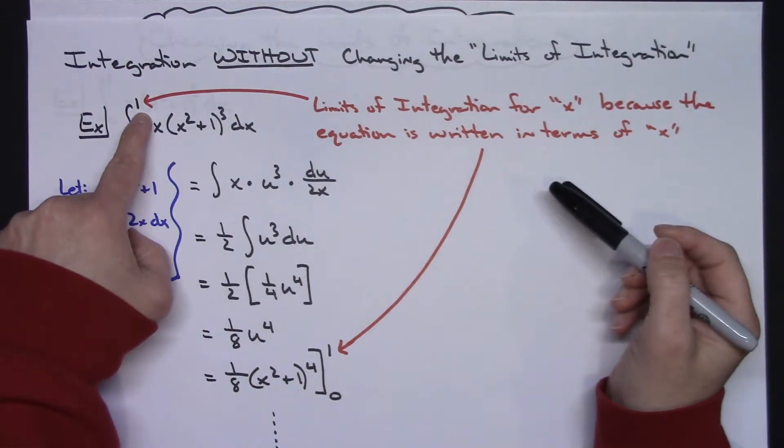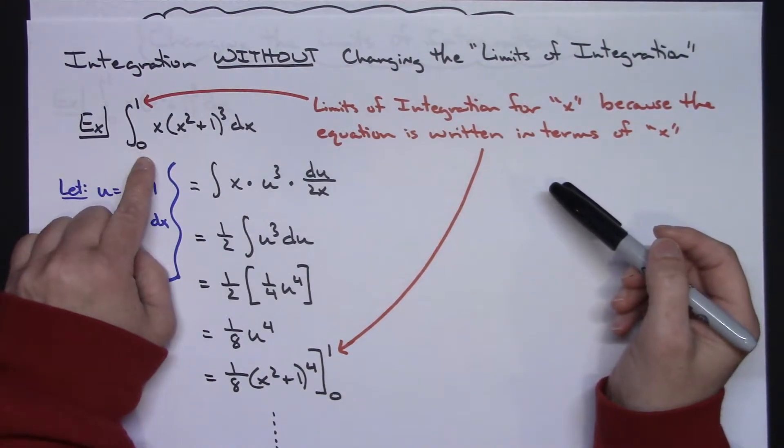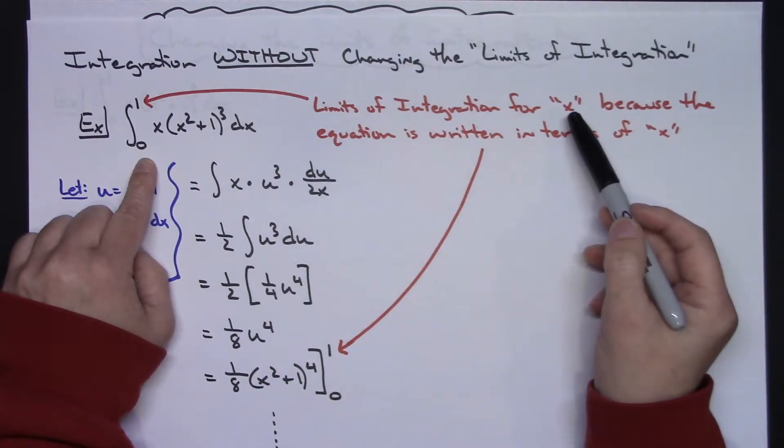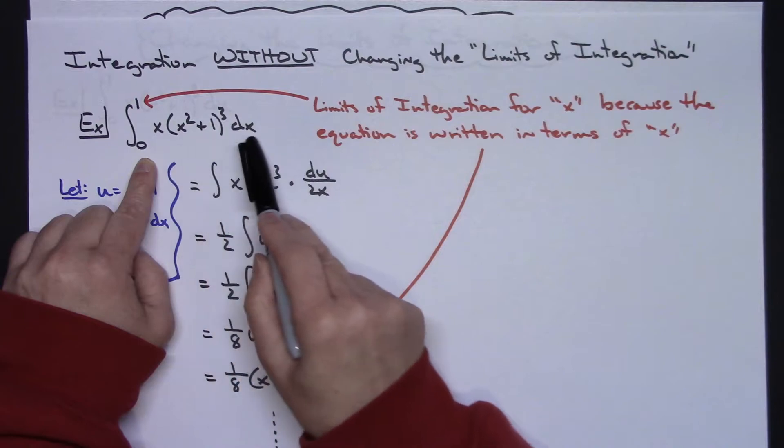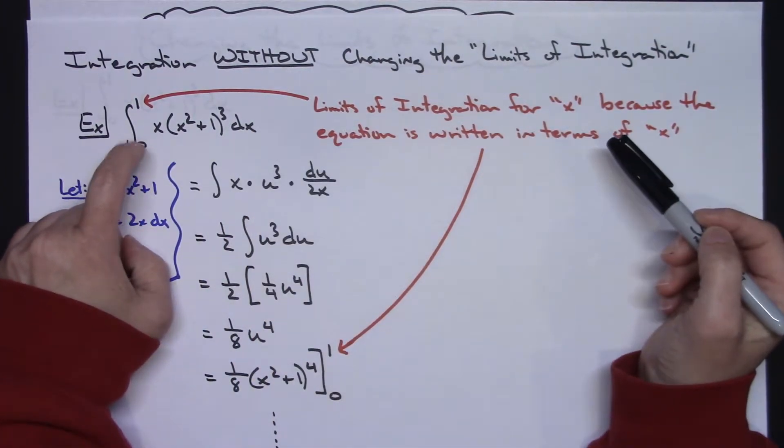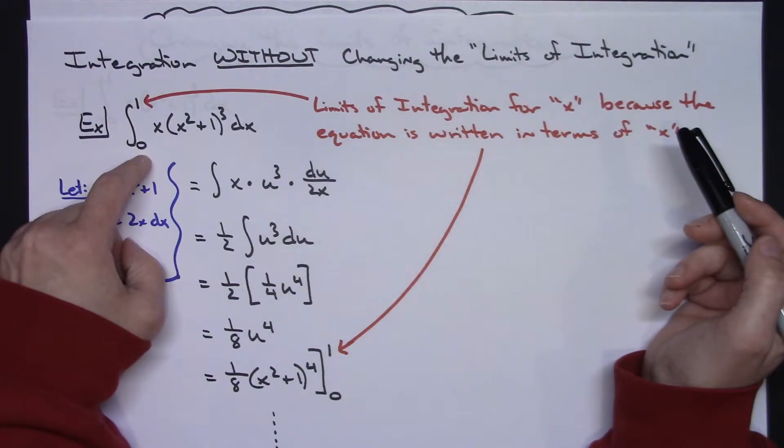The 0 and the 1 here, my limits of integration, these are considered to be limits of integration of x because the equation is in terms of x. I'm integrating an equation in terms of x, I've got dx going on here, so these are limits of integration for x.